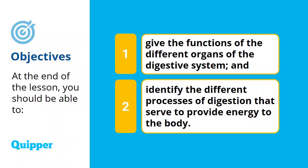If you have your handouts with you, open them and let's look at the objectives of this lesson. At the end of this lesson, you should be able to give the function of the different organs of the digestive system and identify the processes of digestion that serve to provide energy to the body. The events that take place in your digestive system involve what we call six processes.